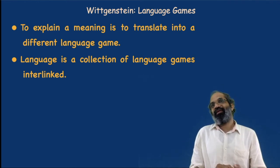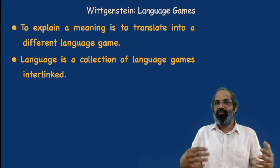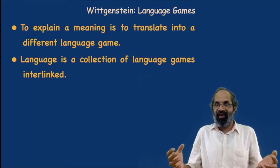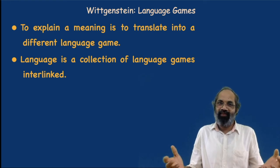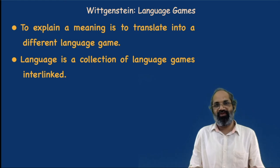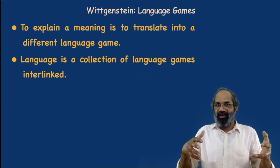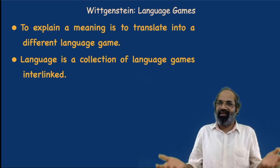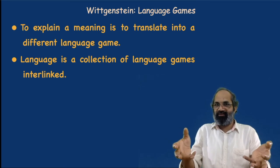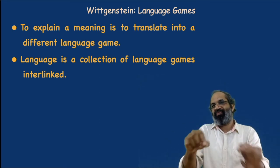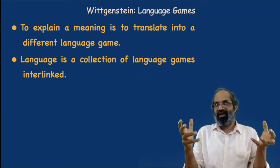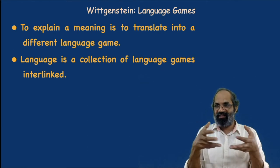He says somewhere in the Investigations: if a lion could speak, I would not be able to understand him, because the lion has a different form of life. The way the lion lives and perceives the world is different from human perception. The language game in a larger context is the form of life. It is within that form of life that language games take place, and within those language games that words and sentences derive their meaning. What we call language is a collection of language games that are interconnected.